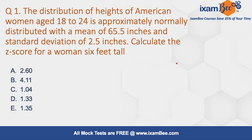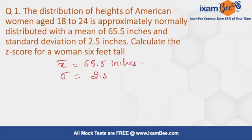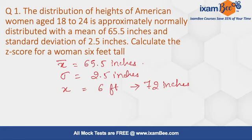Let's see question number one. The distribution of height of American women aged 18 to 24 is approximately normally distributed with a mean of 65.5 inches and standard deviation of 2.5 inches. We have to calculate the z-score for a woman who is 6 feet tall. Here the value for mean is given: x-bar is 65.5 inches, standard deviation is 2.5 inches, and x is 6 feet.